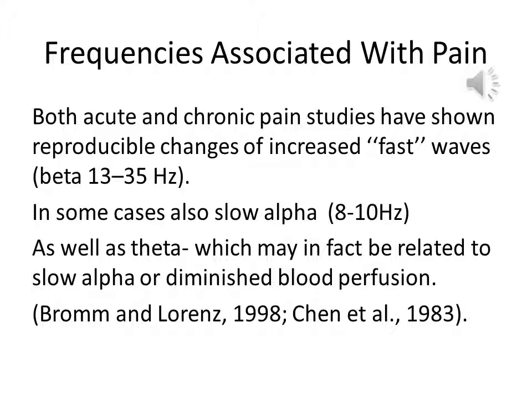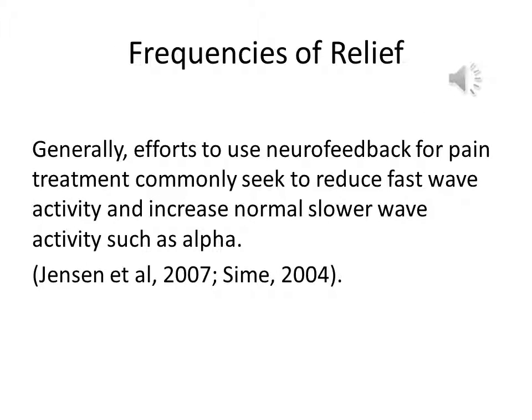There are also theta changes, which may in fact be related to slow alpha or diminished blood perfusion. In general, efforts to use neurofeedback for pain treatment commonly seek to reduce fast wave activity such as beta, and increase normal slower wave activity such as alpha.